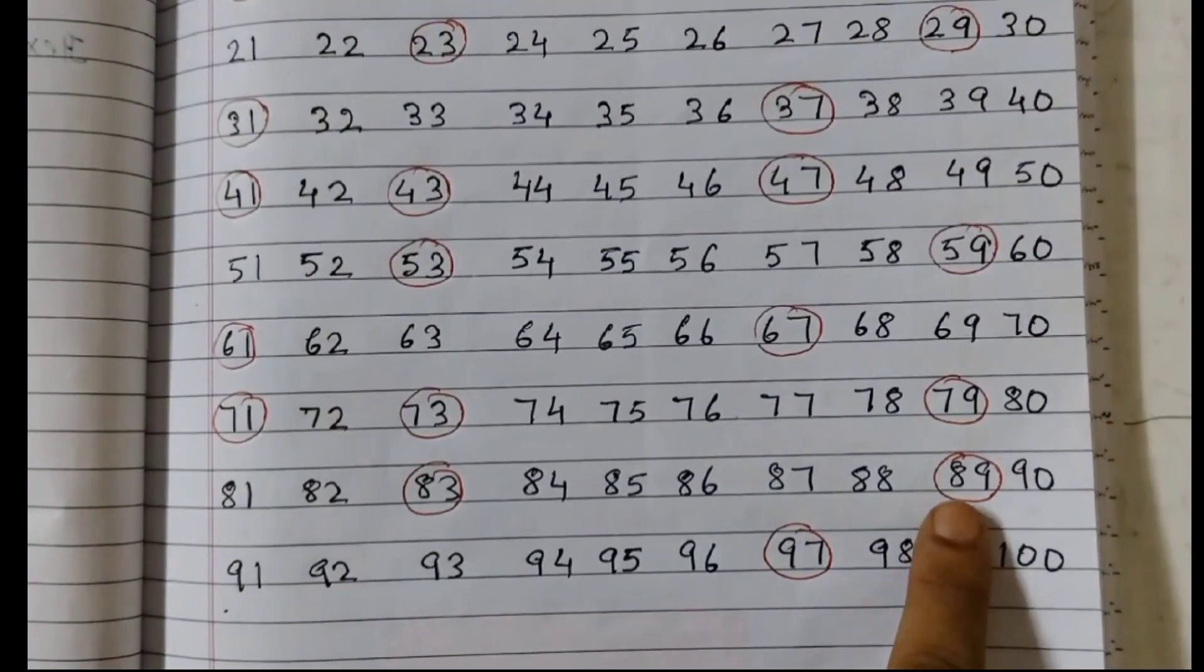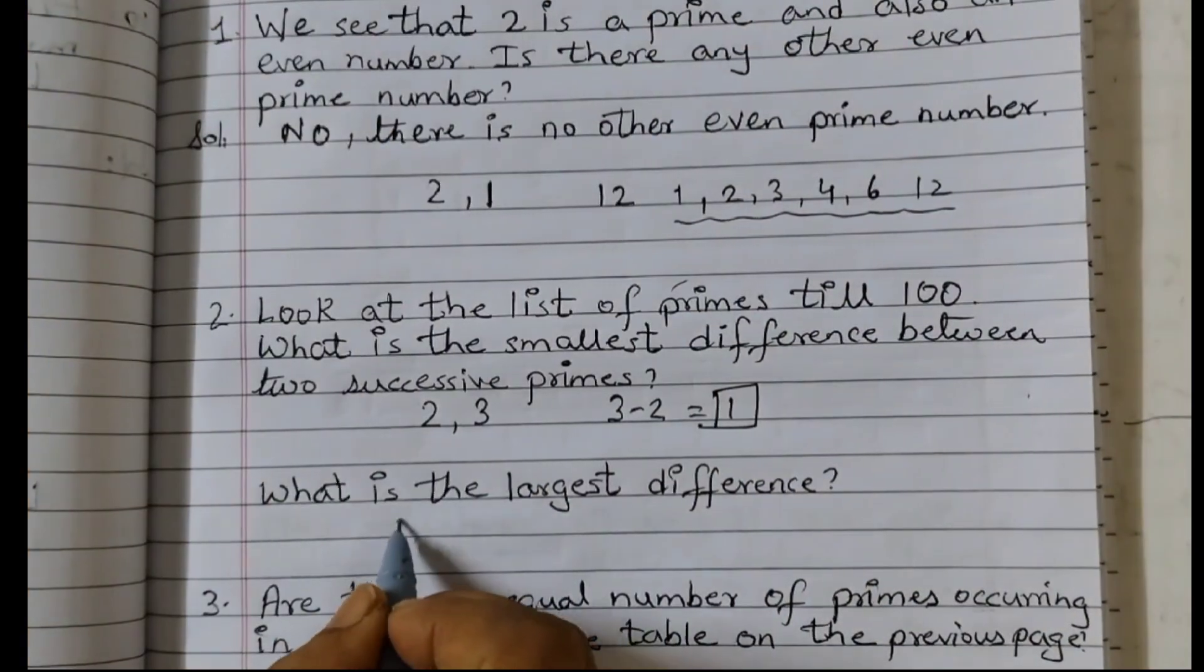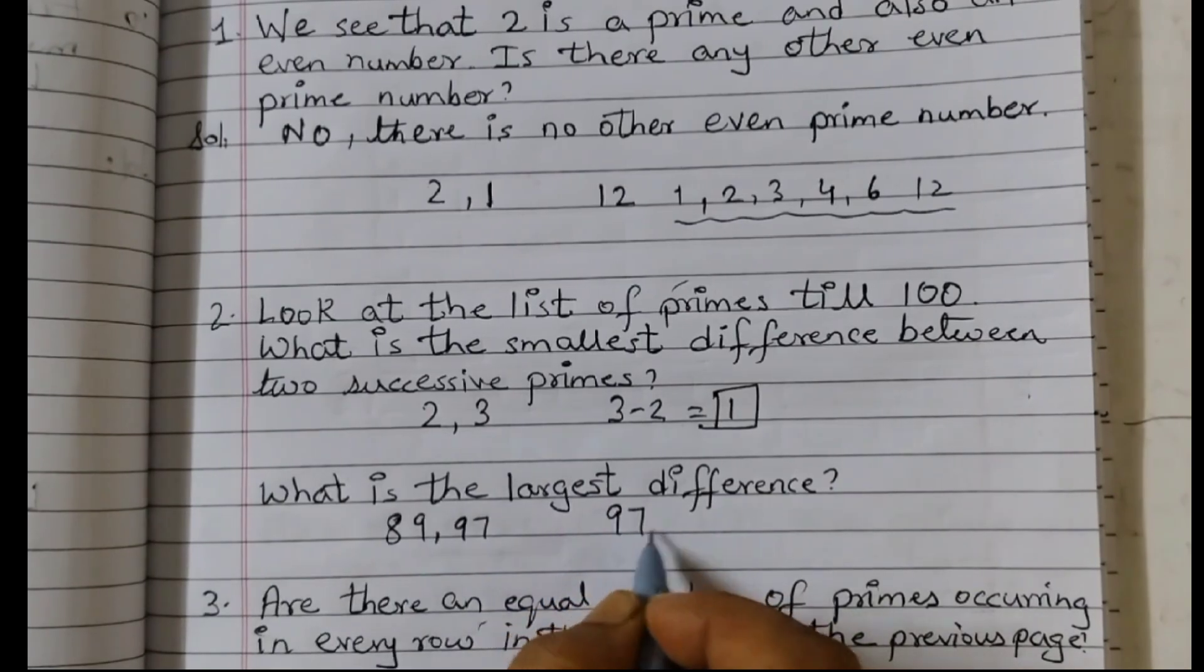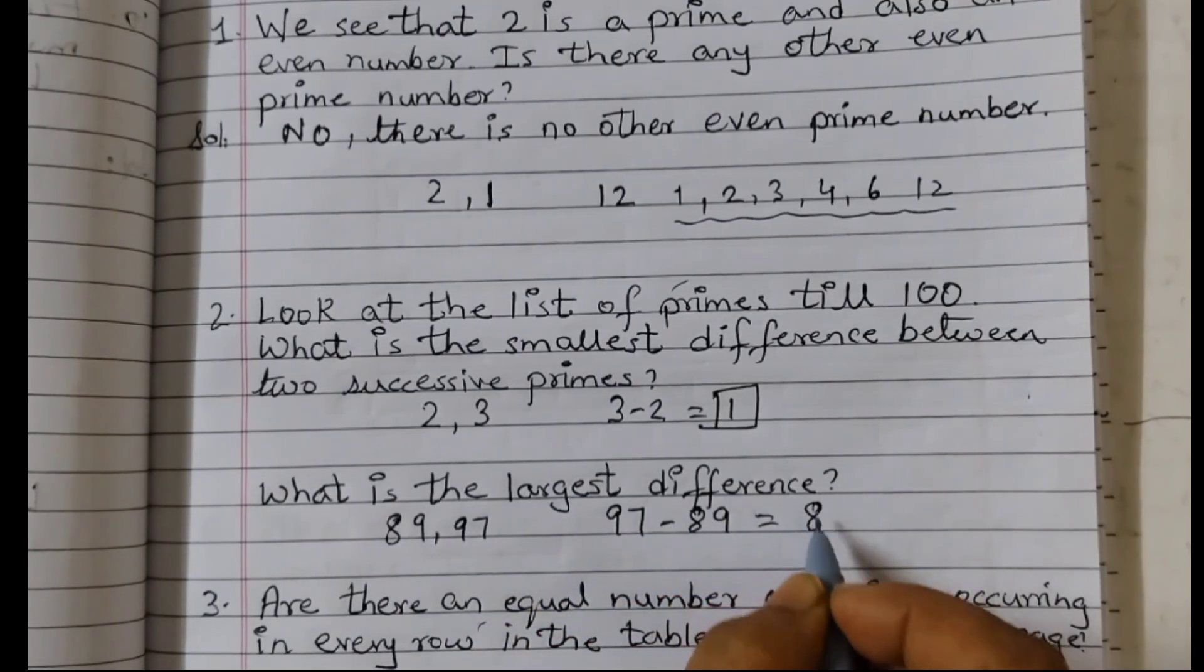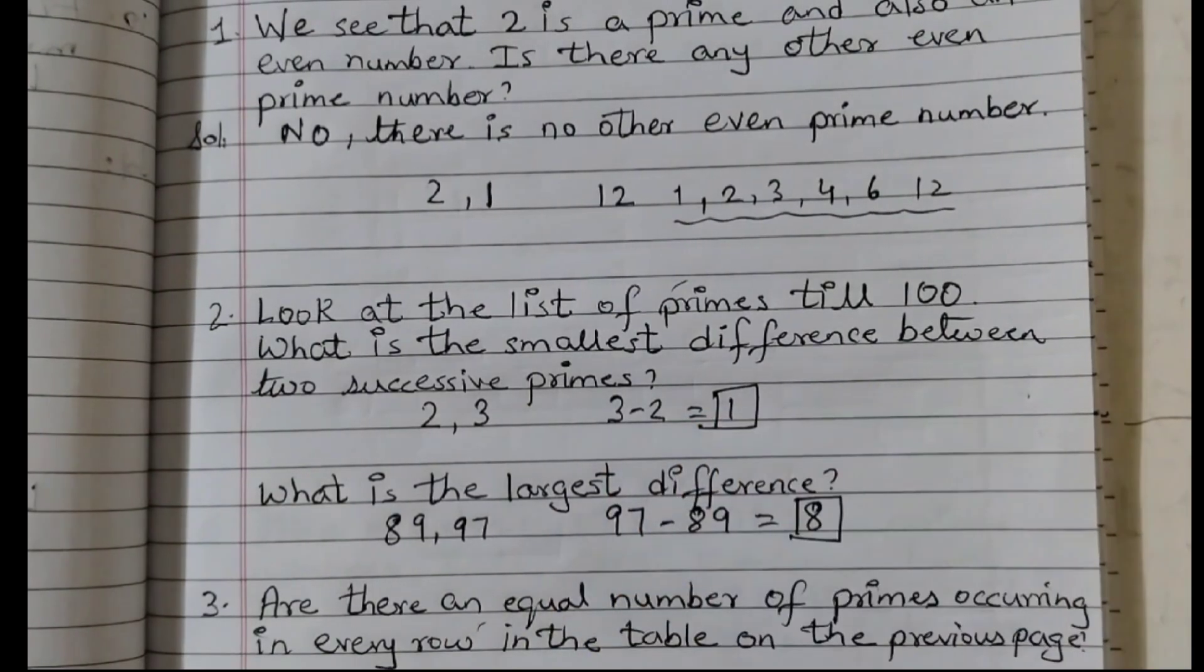That would be between 89 and 97. If I take these two prime numbers, 97 minus 89 is equal to 8. So this is the largest difference between the prime numbers till 100.